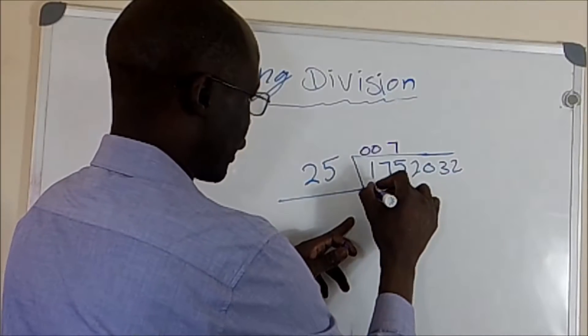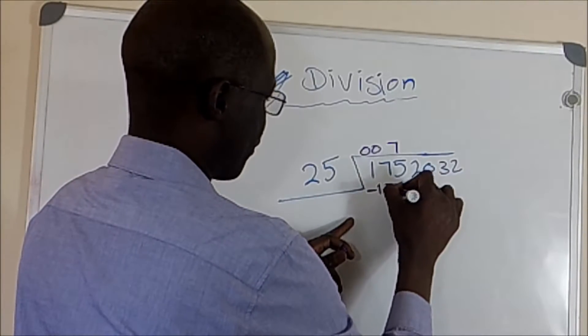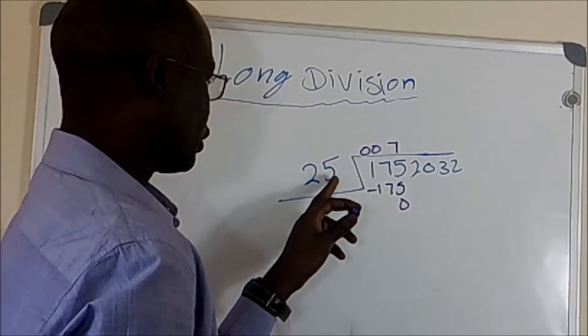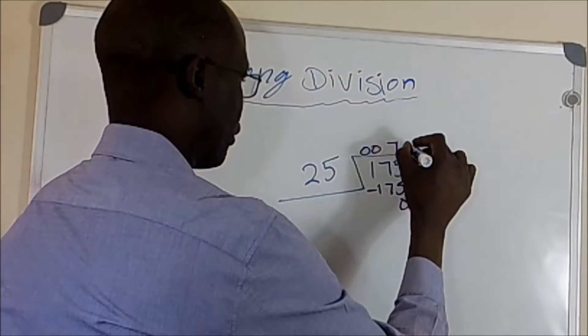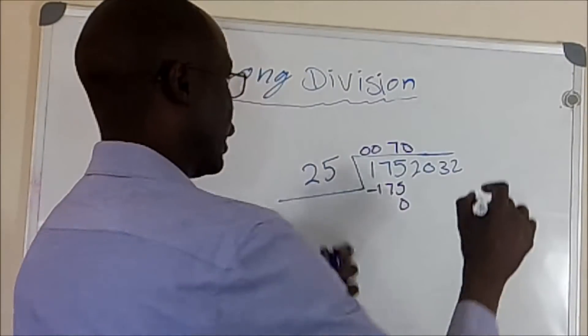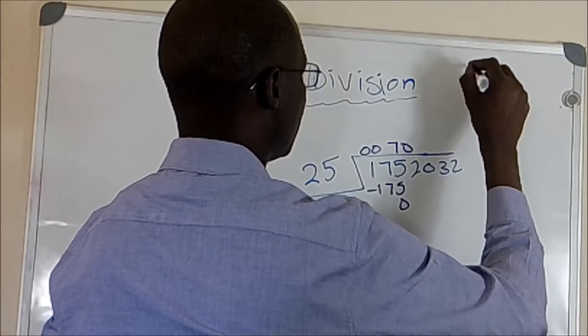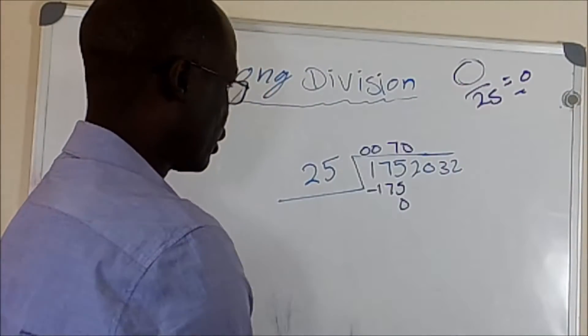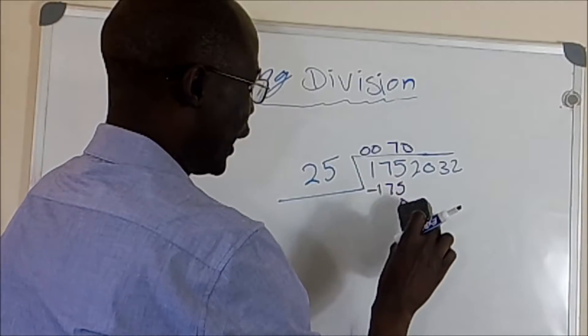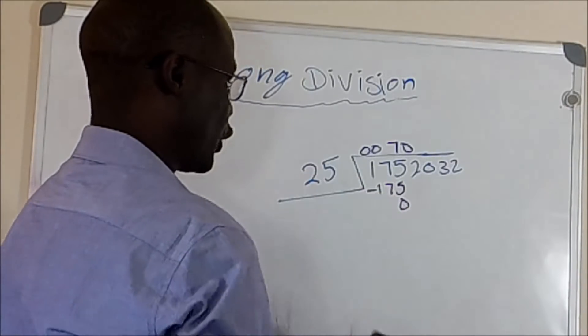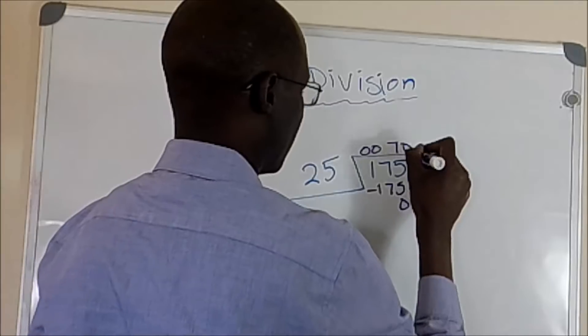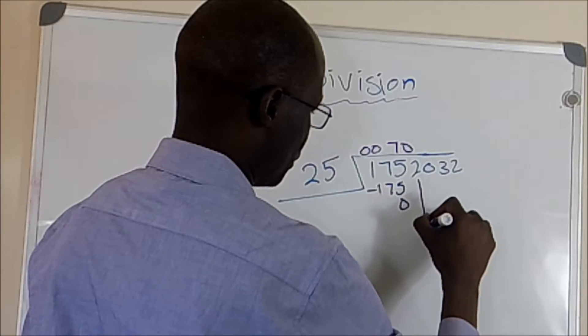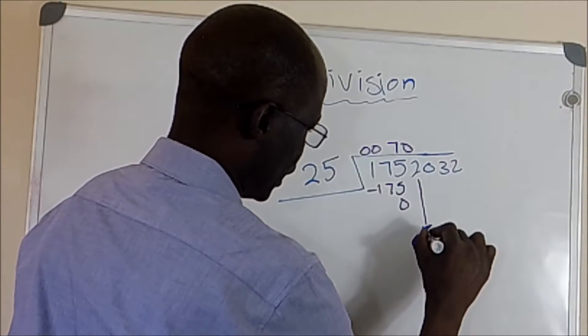And when you subtract 175 from here, you got zero. And if you divide zero by 25, you got zero. Because we know the rule, any number divided by zero gives zero, which is 25 divided by this one gives zero. So we got zero there. And 0 multiplied by 25, you got zero. So when you have zero, you're going to bring 2 down, so you have 0 and 2.